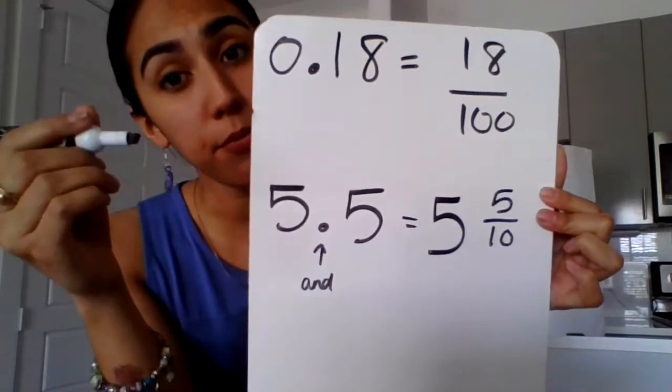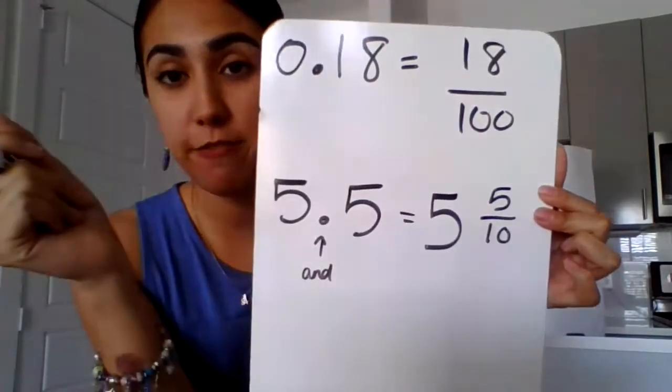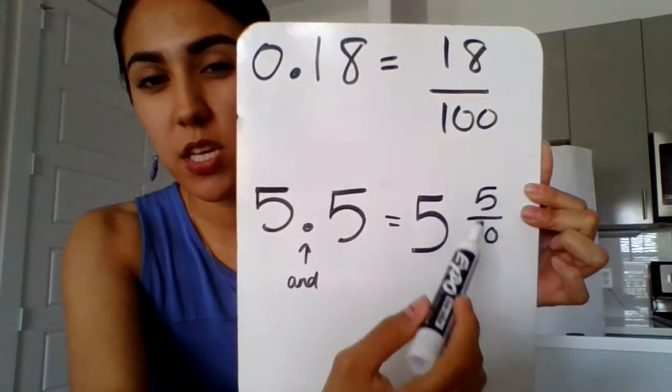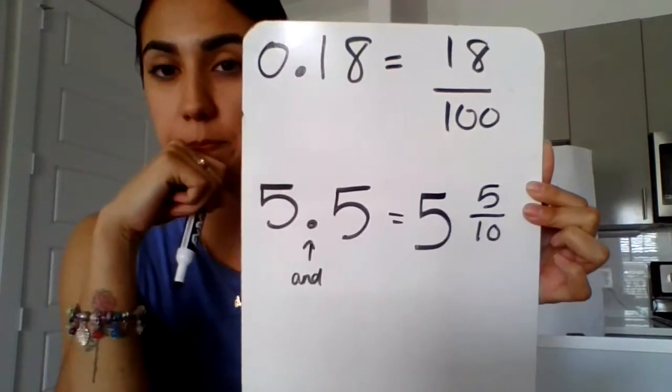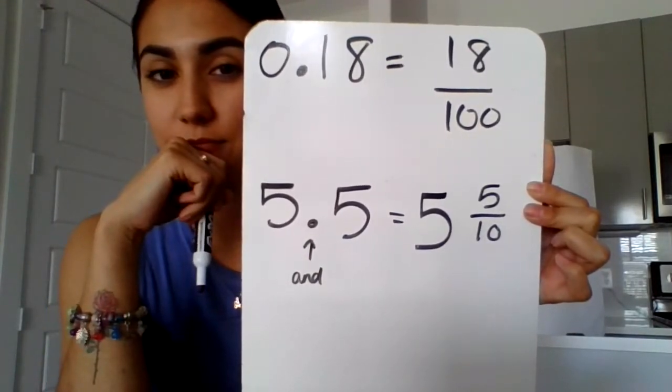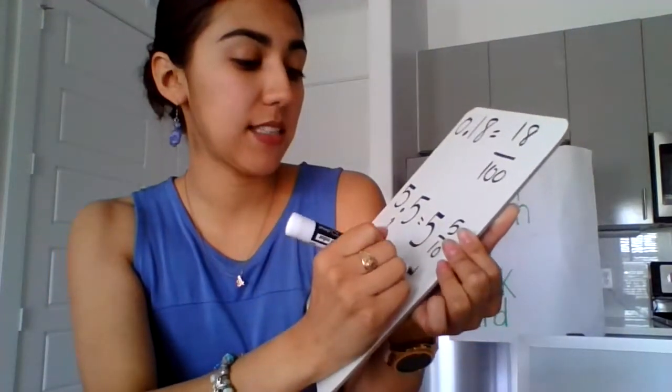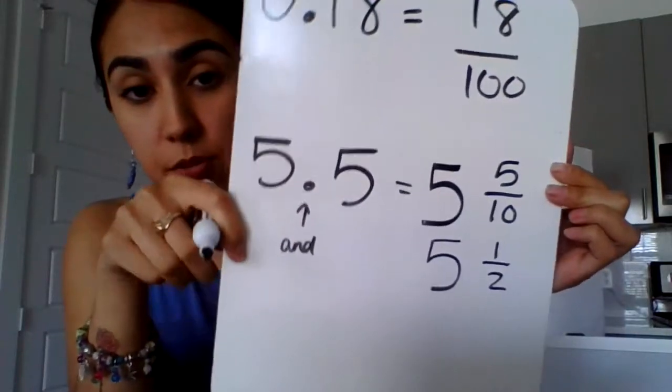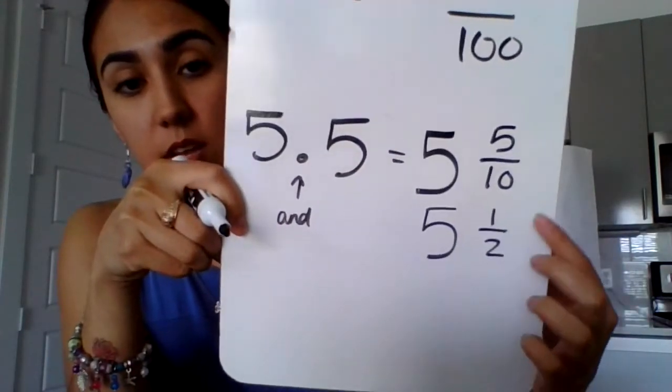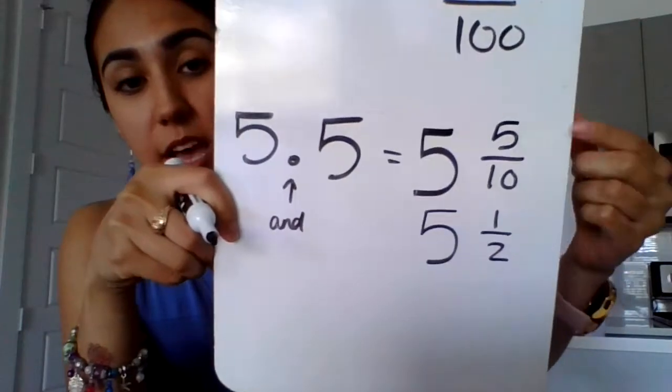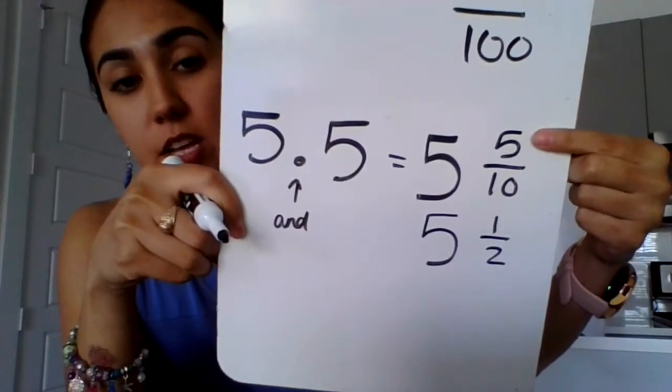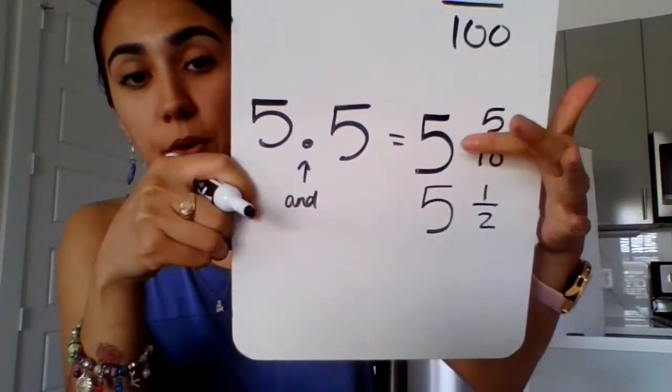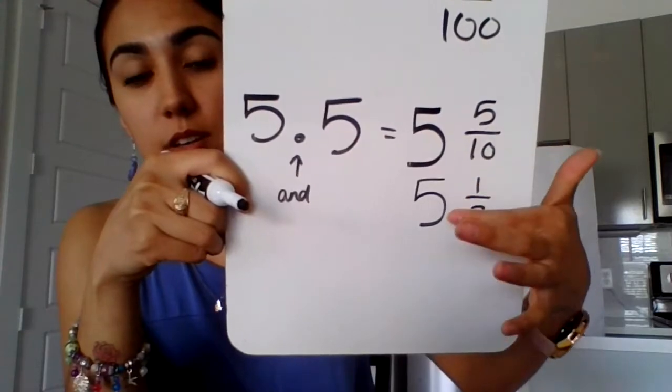Now, we can simplify this fraction 5 tenths. Who knows how we're going to simplify 5 tenths? What's an equivalent fraction to 5 tenths? That's right. 5 tenths can also be written, or this decimal can also be written as 5 and 1 half. Because what's half of 5? I'm sorry, what's half of 10? 5.